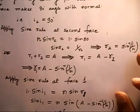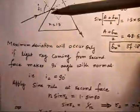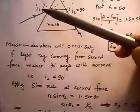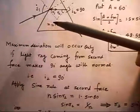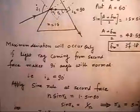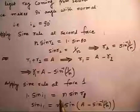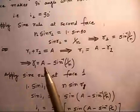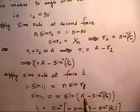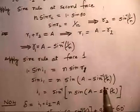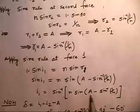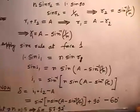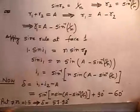Now applying Snell's law at the first face: 1 times sin(I1) equals N times sin(R1). So sin(I1) equals N times sin(R1), where R1 equals A minus sin inverse(1/N). Taking the inverse on both sides gives I1. We need I1 to find delta, because delta equals I1 plus I2 minus A.